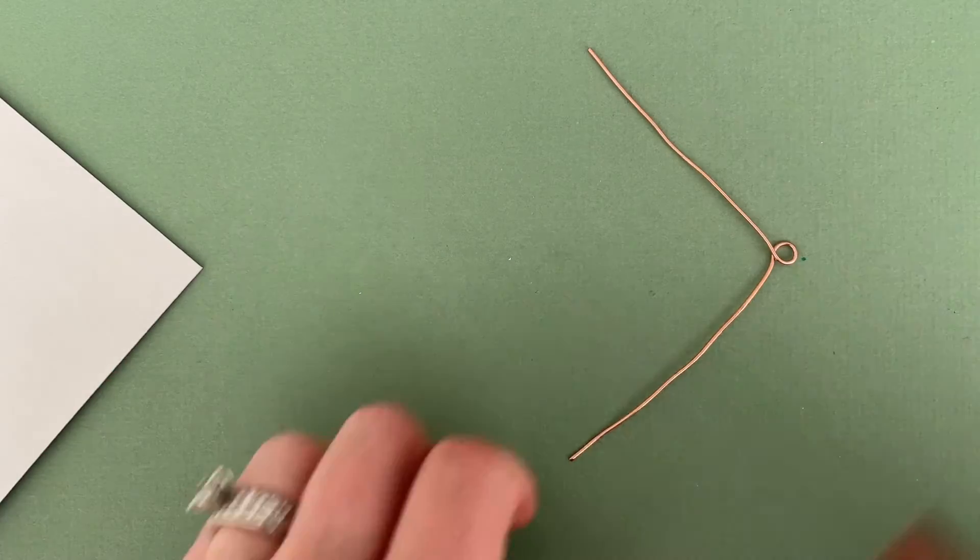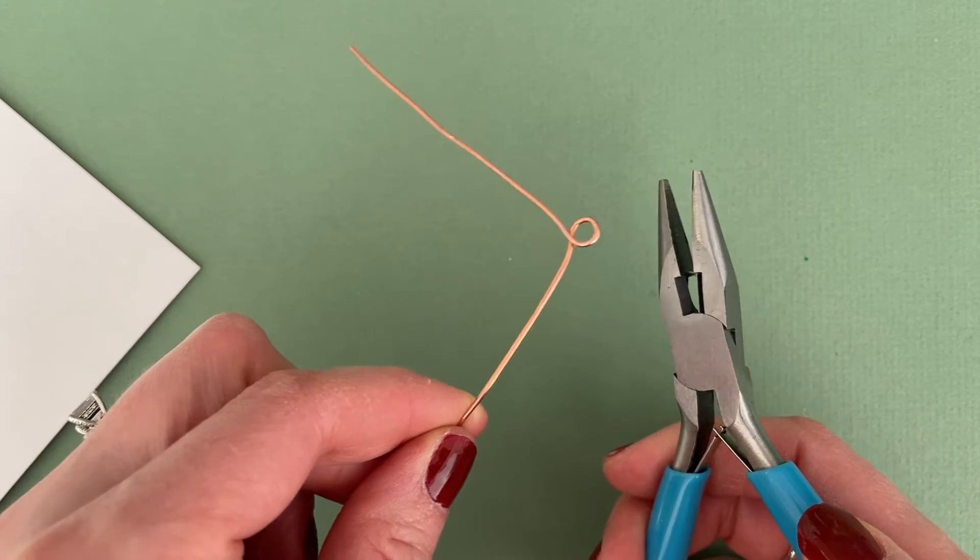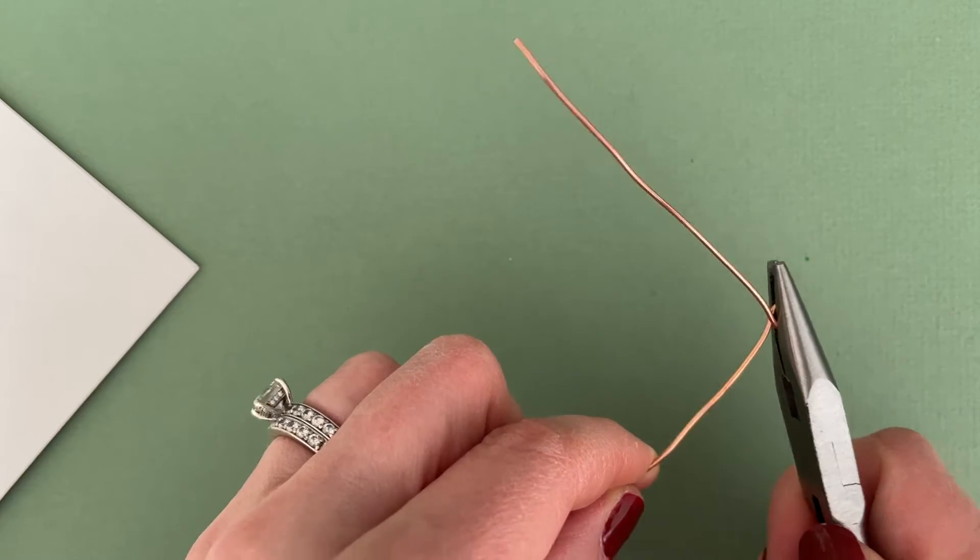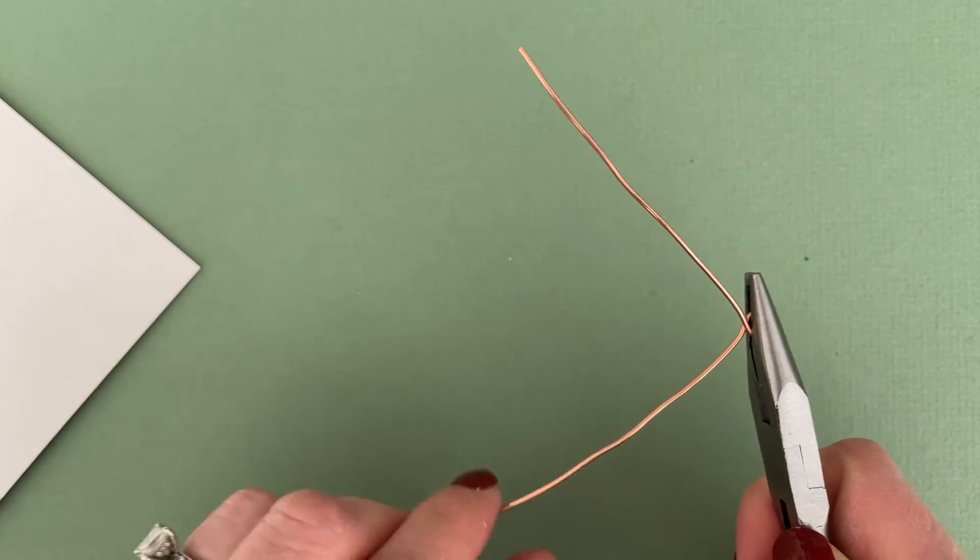Now that I'm ready to begin my actual twist, I'm going to switch to my needle nose pliers. The needle nose pliers will allow me to grip that loop that I made really securely so things don't wiggle around as I'm trying to do the twist.